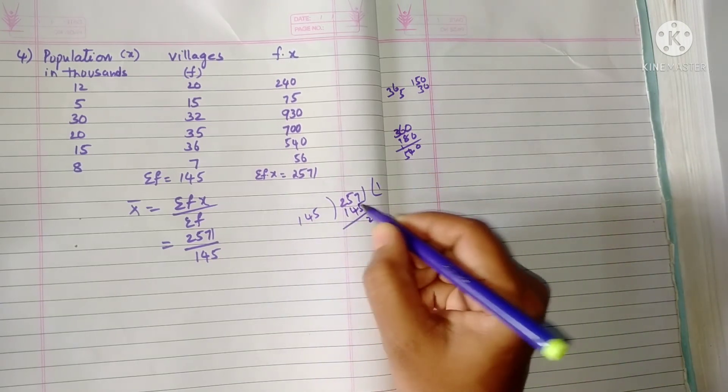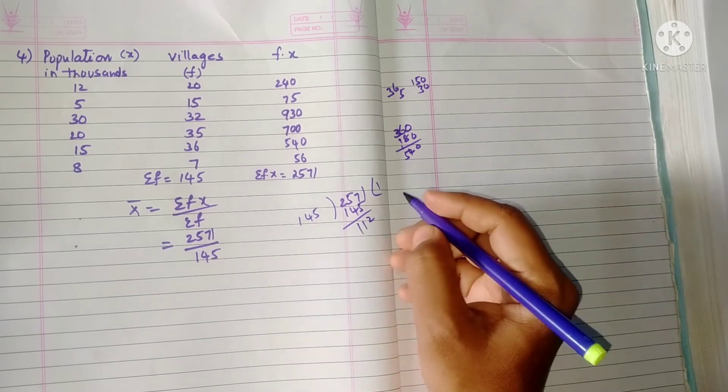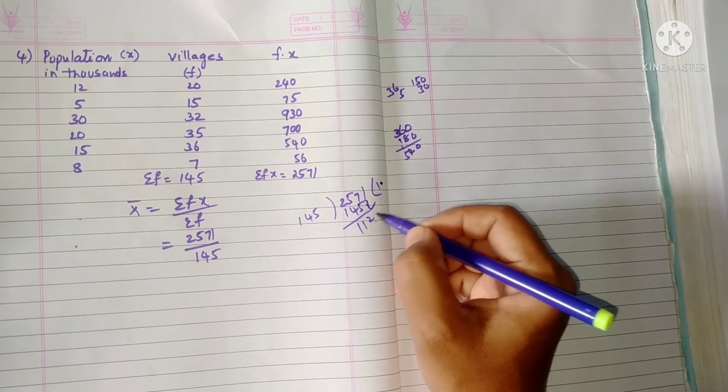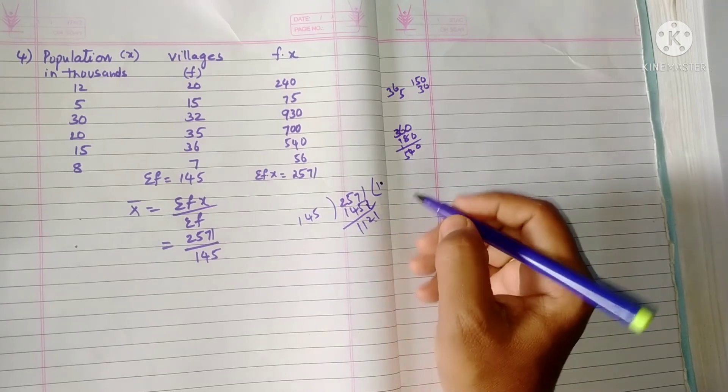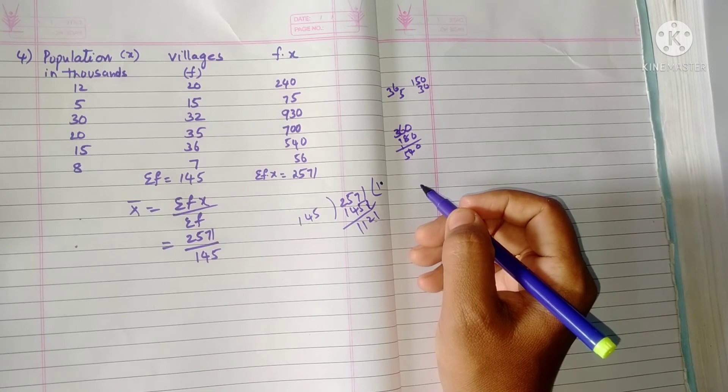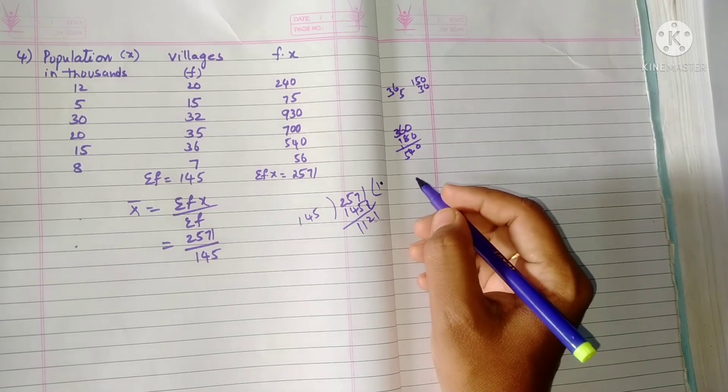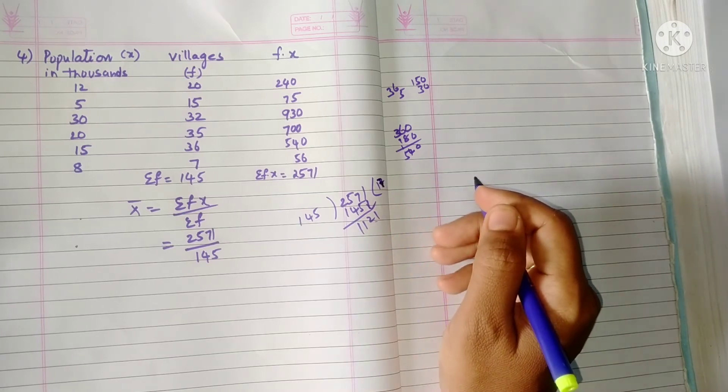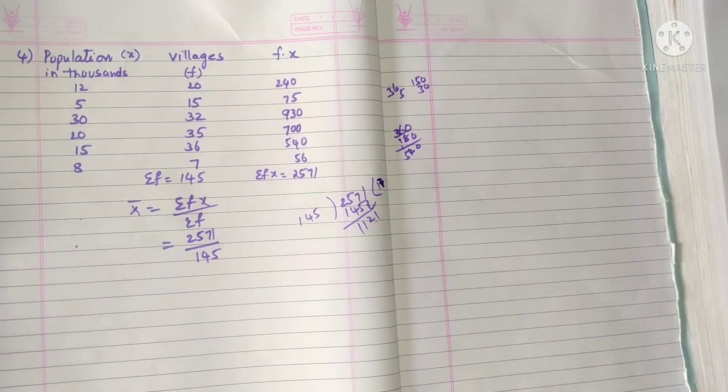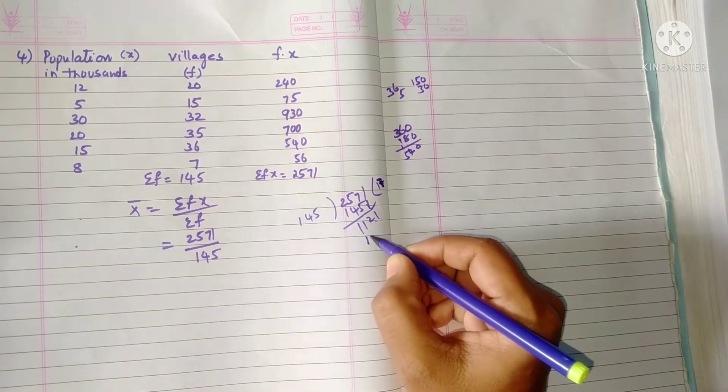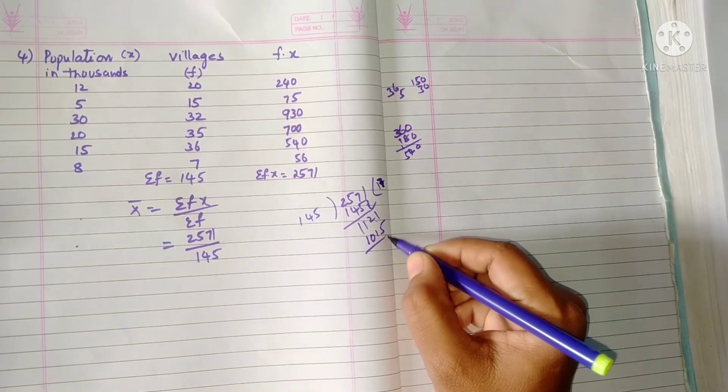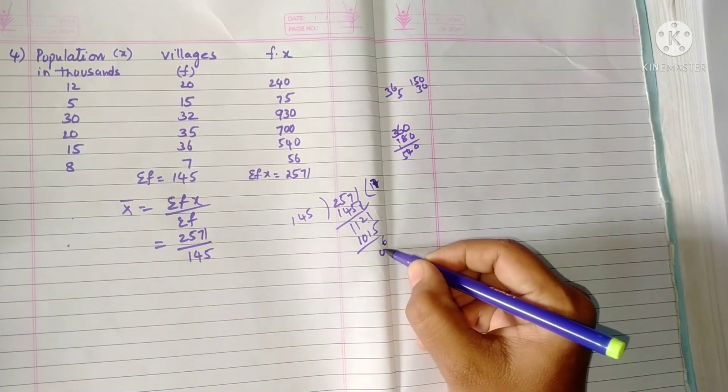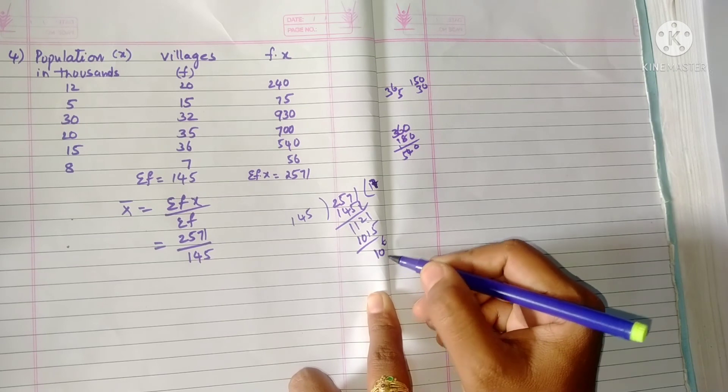Okay, so now 14 sevens are 98, right? So 145 sevens, we'll check it. 145 sevens, it is 1015. So after subtracting here, six and zero, one—so this is 106. It is lesser than 145, so now put the point and again zero. So again seven times we can write.